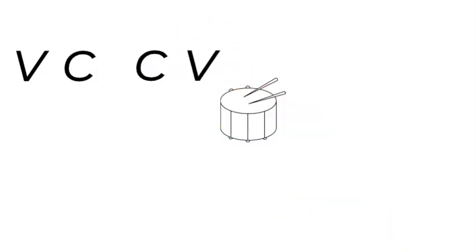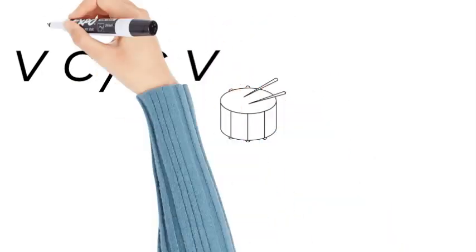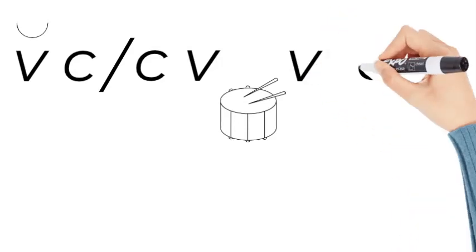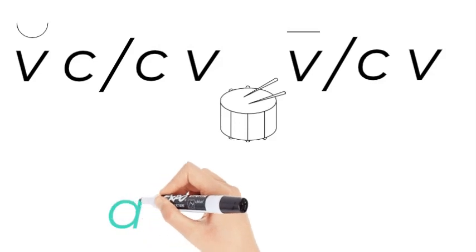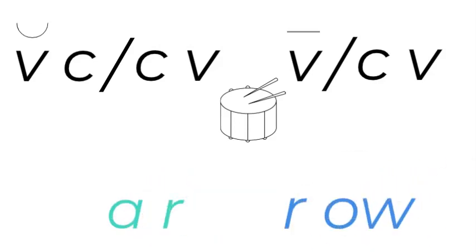We can look for two patterns: vowel consonant consonant vowel, and we break it up between the consonants. That's a short vowel usually. And there's also vowel consonant vowel, and you break it up after the first vowel.